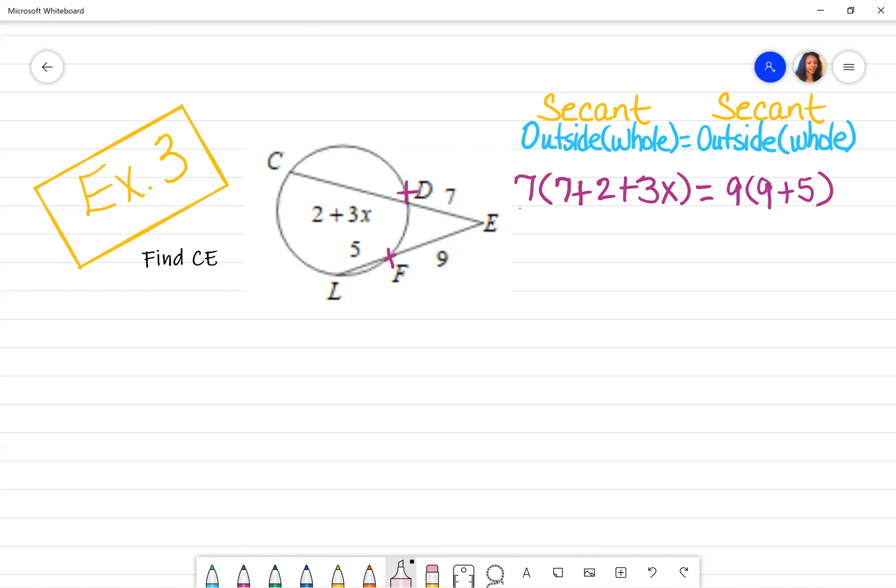And now I just simplify what I have. 7 times, well, 7 plus 2 is 9 plus 3X is equal to, and then here, instead of distributing 9 plus 5 is simply 14. So go ahead and combine your like terms.